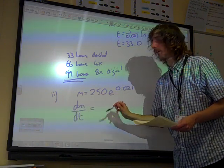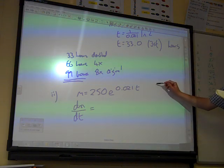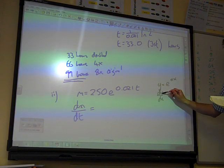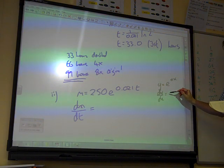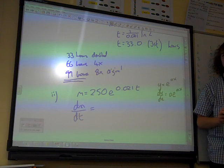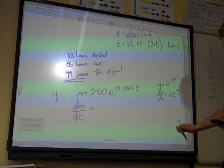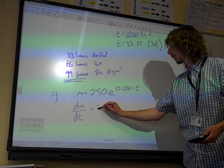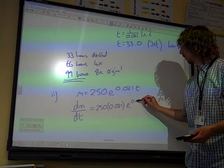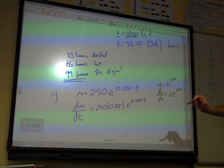For part 2 now, I'm just going to remind myself what that function was: 250e to 0.021t. So dm by dt, remember it's not on the formula sheet, but it's on our poster. So if we've got y is e to the ax, then dy by dx is ae to the ax. So in this case the a is 0.021. So we've got 250 times 0.021e to the 0.021t. That's 5.25e to the 0.021t.